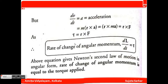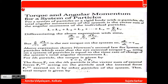So the rate of change of angular momentum dL/dt is equivalent to the torque. According to Newton's second law of motion in angular form, we can say that the rate of change of angular momentum is equal to the torque applied. Now let's consider torque and angular momentum of a system of particles.